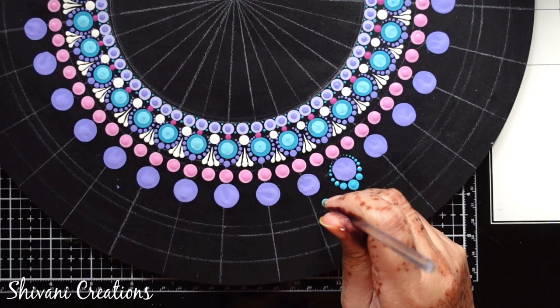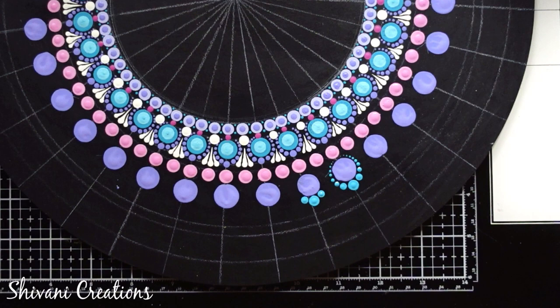Then around this, first time I am putting one teal dot using big tool, then two small dots using smaller tool, and again taking my ball tool to make more smaller dots.